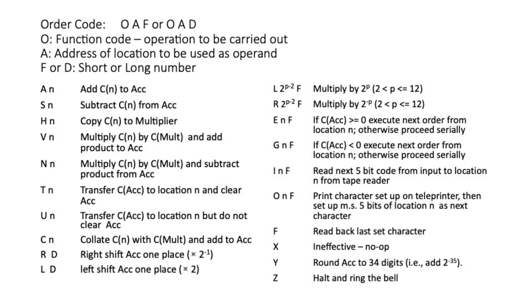There were only two conditional orders, and that's another weakness of the machine — there was no test for equals to zero. The E order tests if the accumulator is positive; if it is, you jump to location N, otherwise you continue. The G order tests if the accumulator is negative; if it is, you go to location N, otherwise you continue serially. To test for zero precisely, you essentially have to subtract one and watch it go negative, then you know it must have been zero — quite messy.